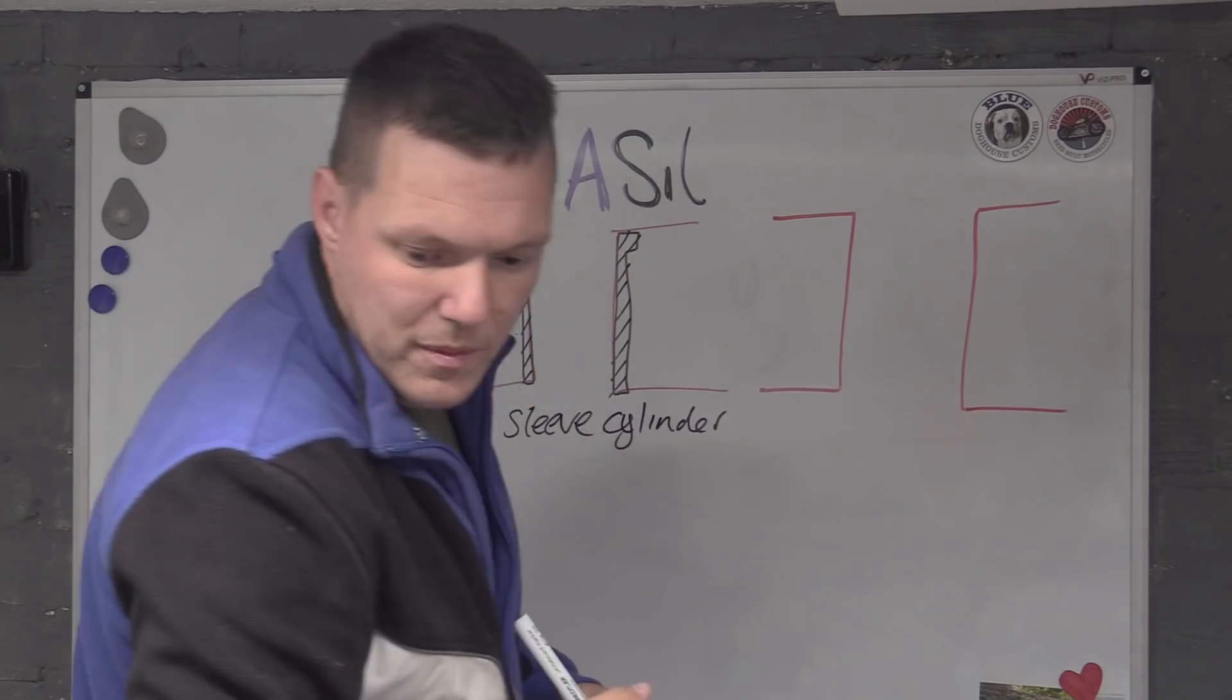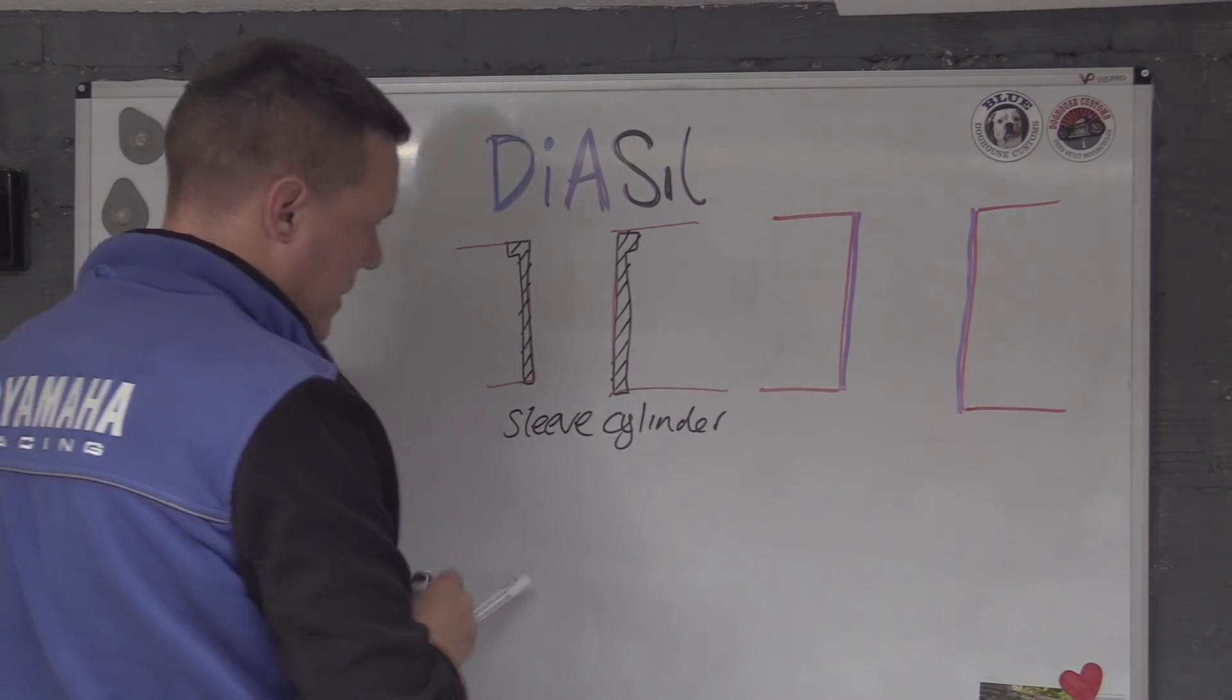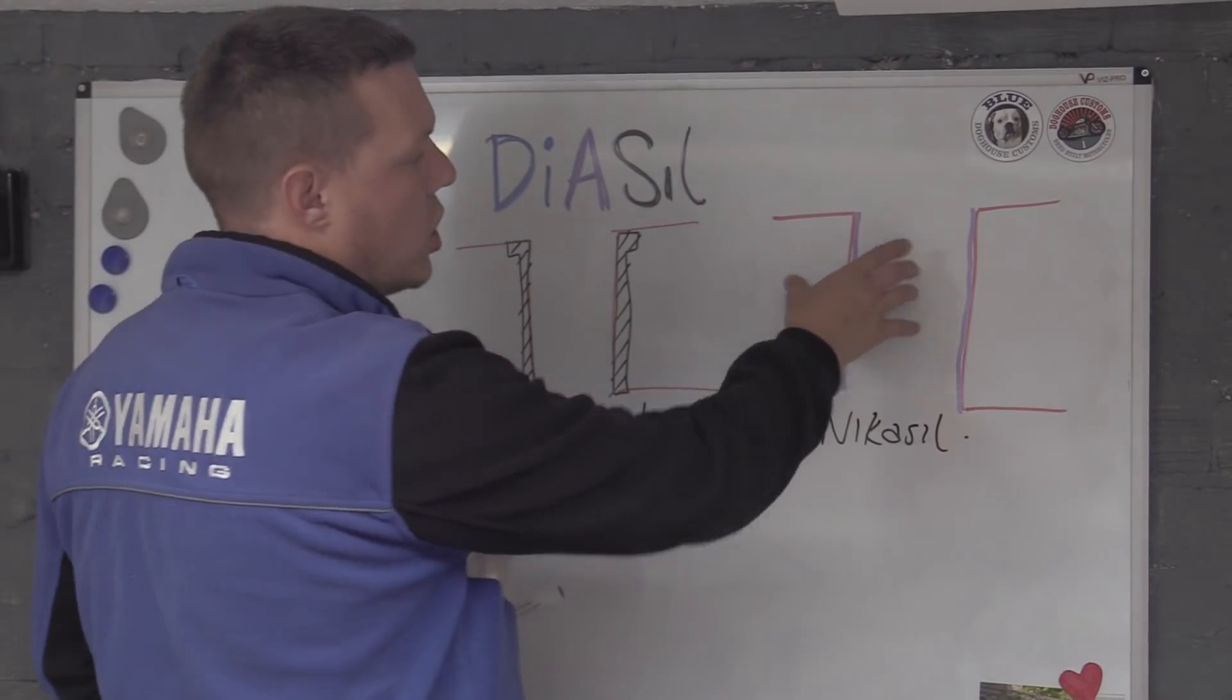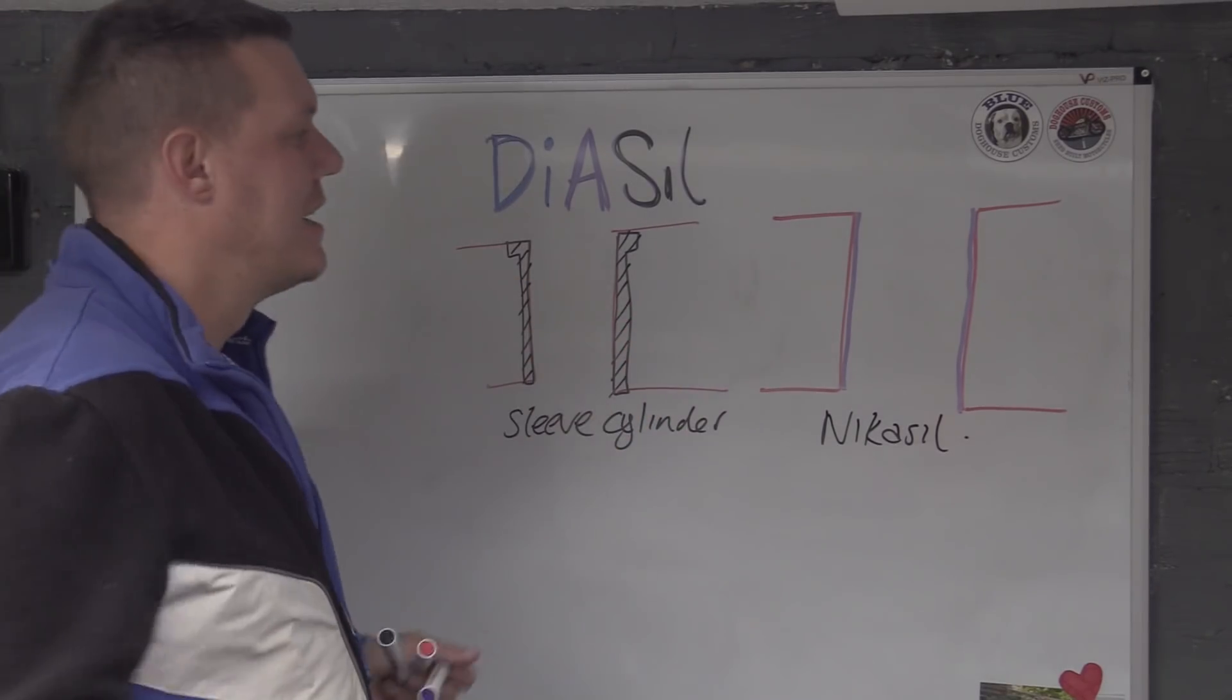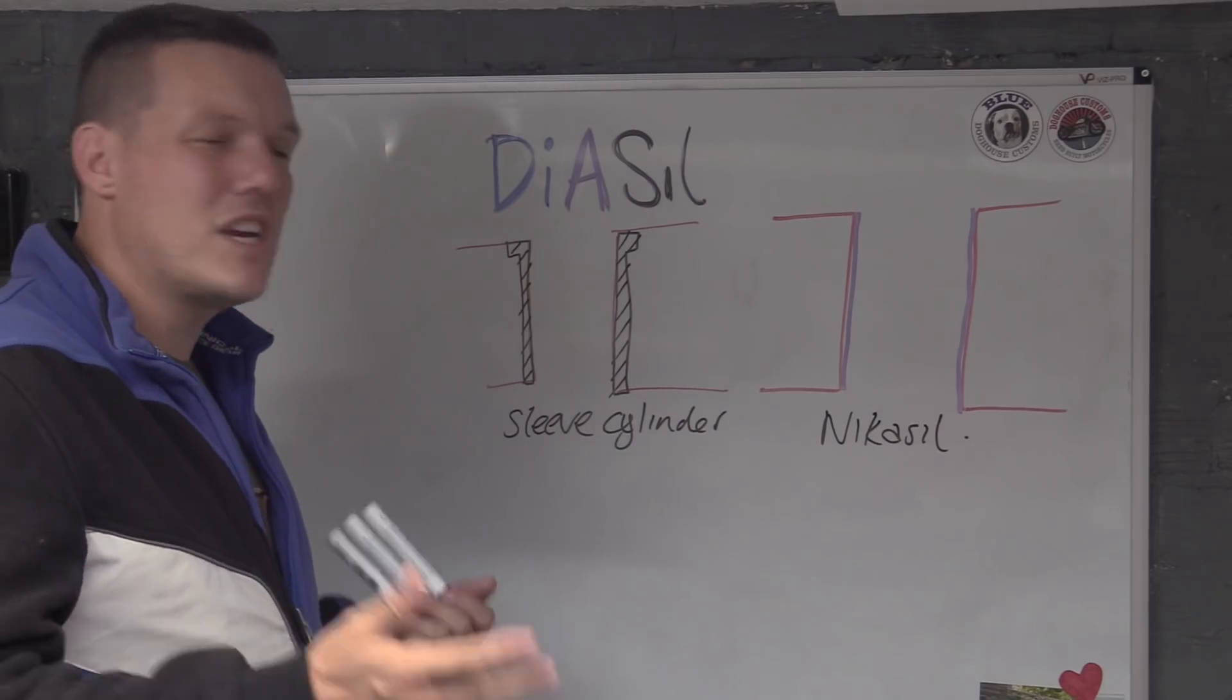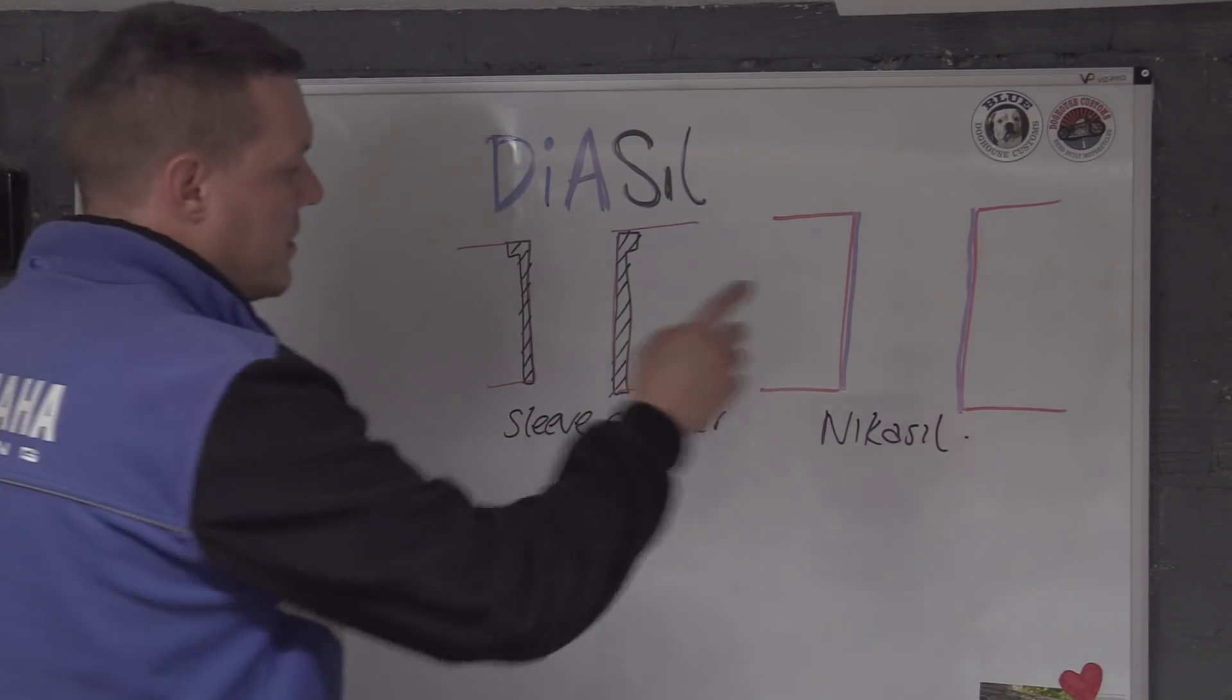The other type is you have a solid aluminum cylinder and then you coat the inside of the cylinder with something like nicosil. This is nickel silicon carbide coating. As the nickel wears away, because the nickel is quite tough, it leaves behind these silicon carbide crystals and these are the things that basically put up most of the fight. You end up wearing away your rings and your piston faster than you do your cylinders.